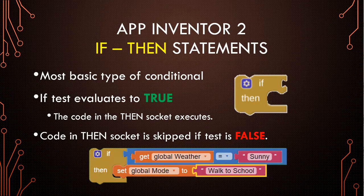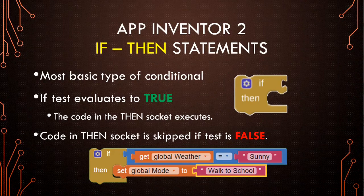Here's an example of some blocks of code using the basic if-then. If our variable weather is set to sunny, then our transportation mode is going to be to walk to school. It doesn't say anything about what happens when it's not sunny.